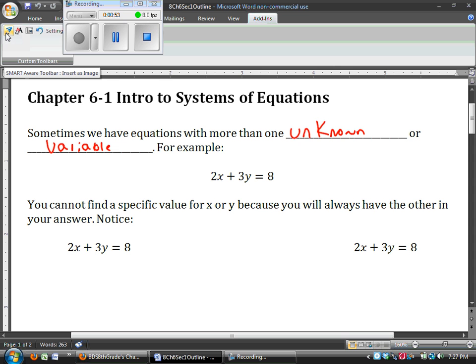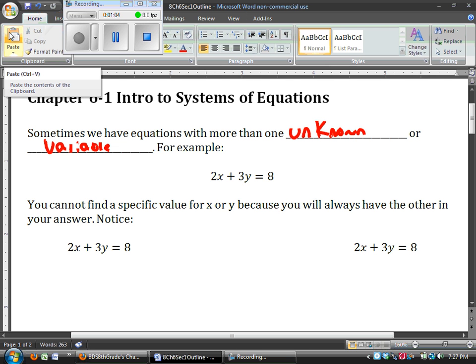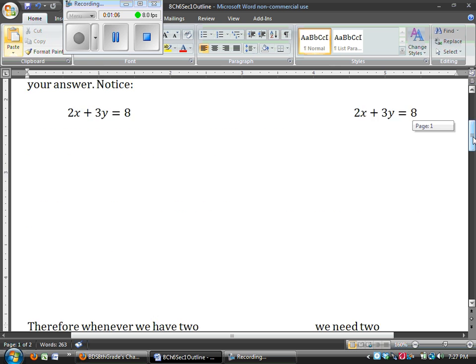So something like 2x plus 3y equals 8. We notice we cannot find a specific value for x and y, because every time I try to solve for one, the other gets in the way.